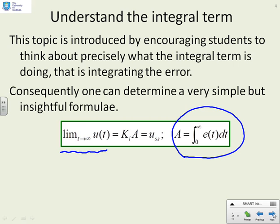The limit as t goes to infinity of u of t is the integral term ki times A, where A is the integral from 0 to infinity, the asymptotic area of the error curve. That's what this term here is showing. What's interesting here is the steady state value of the input has a very simple formula, ki times A.